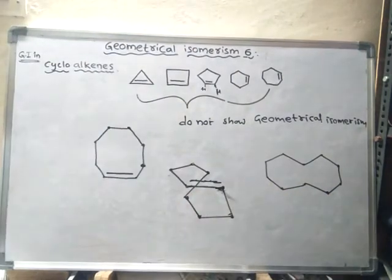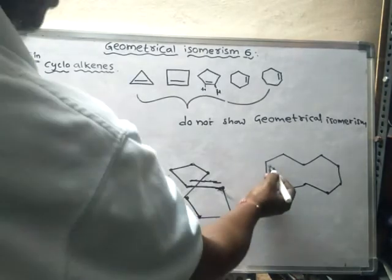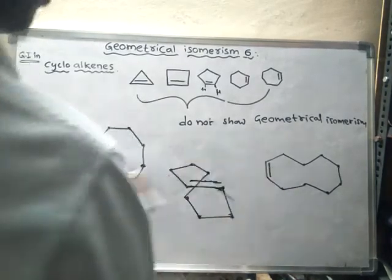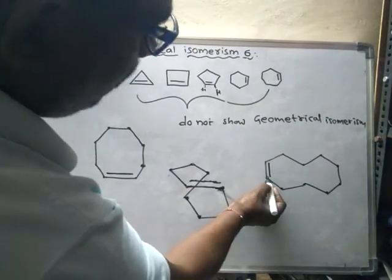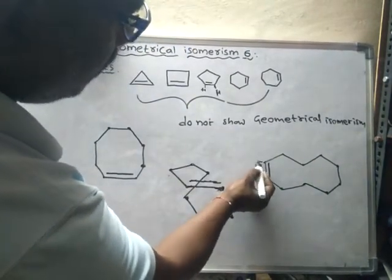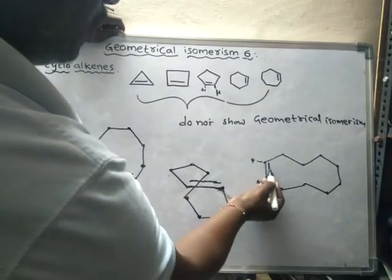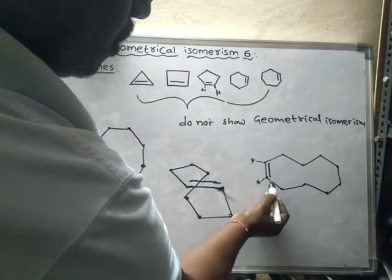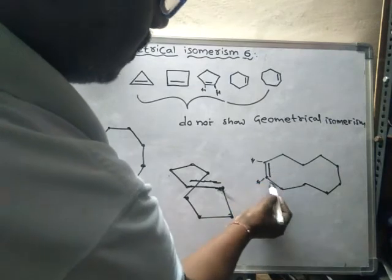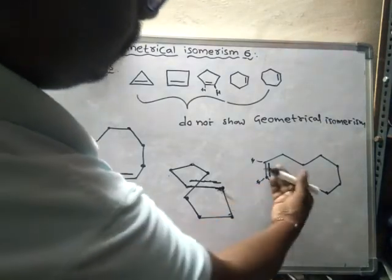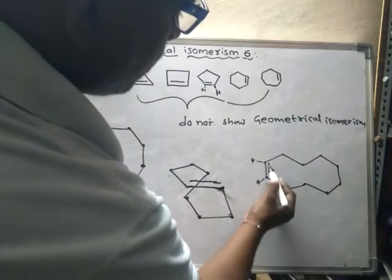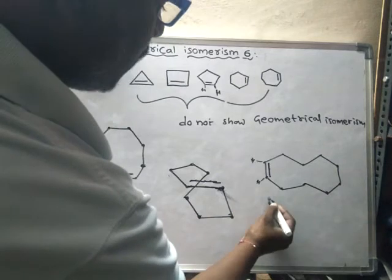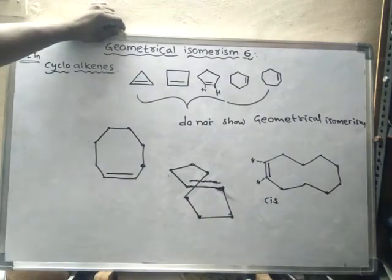With 10 carbons and a double bond somewhere in the ring, one hydrogen and another hydrogen are attached to the double-bond carbons. The other groups are present on the same side, so this is the cis form.